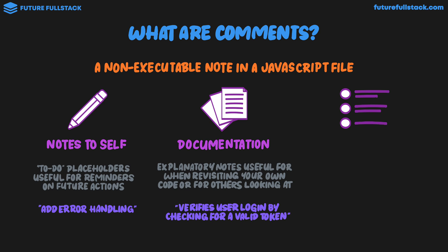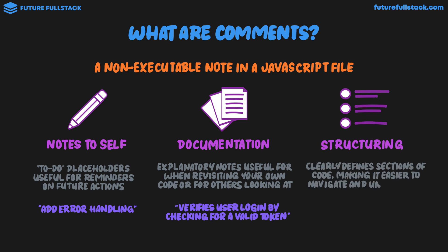The third type of comment is used for structuring. This clearly defines sections of code, making it easier to navigate and understand. You can think of them like headings in a Google Doc. Some comments used for structuring would be 'variables,' which would list all the variables below it, or 'functions,' which would list all the functions in the code below it.